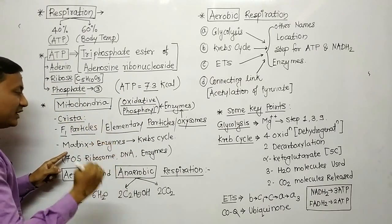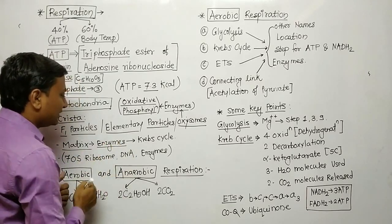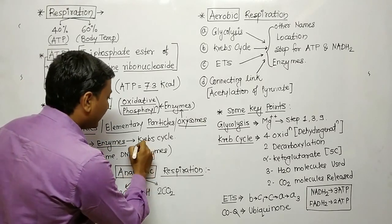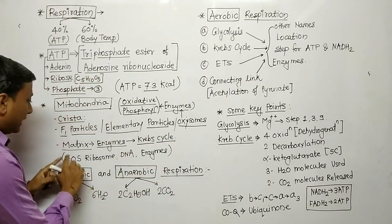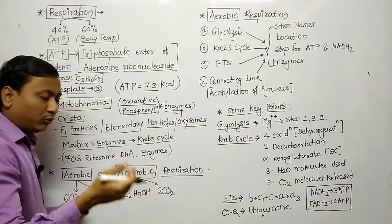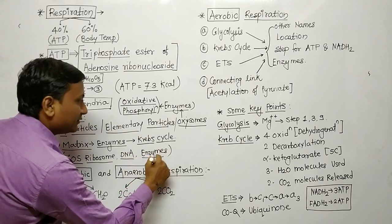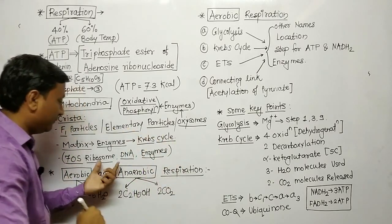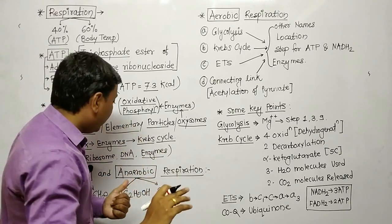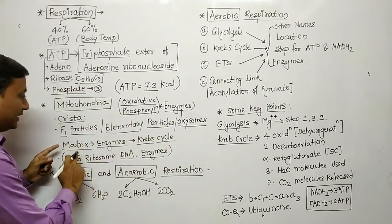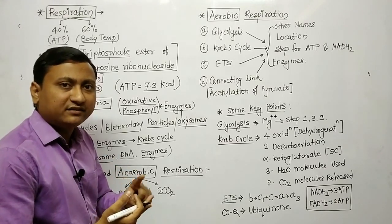Inside the inner membrane of the mitochondria is the mitochondrial matrix. There are many enzymes required for the Krebs cycle, which is the second step in aerobic respiration. In the matrix there are also 70S type ribosomes, DNA, and enzymes for the Krebs cycle. So mitochondria is a self-duplicating and semi-autonomous cell organelle.